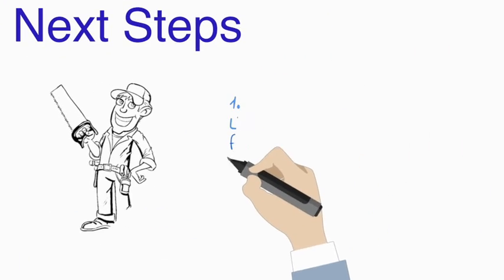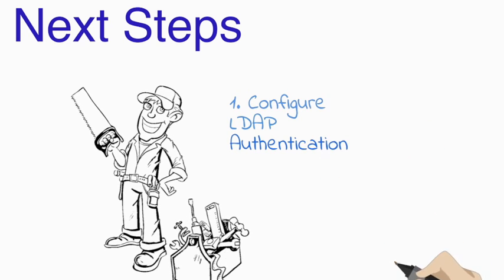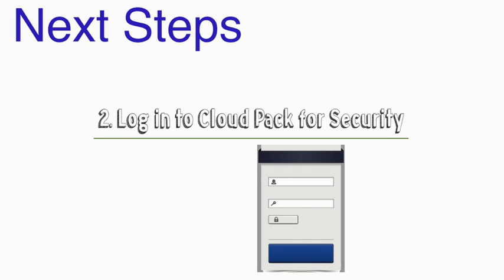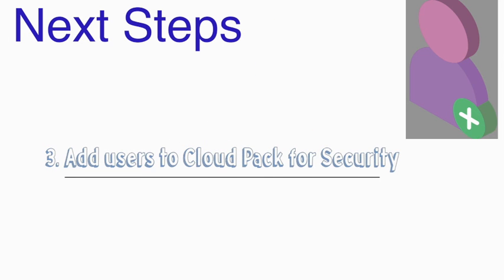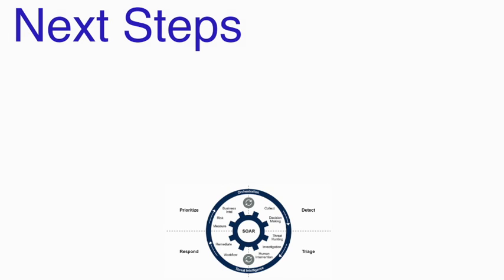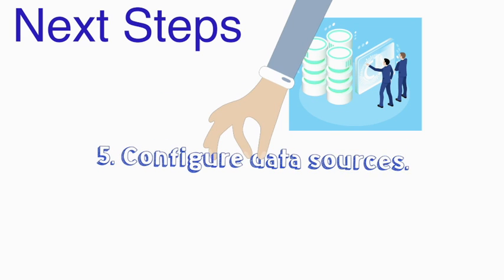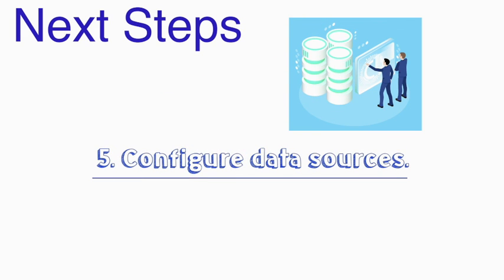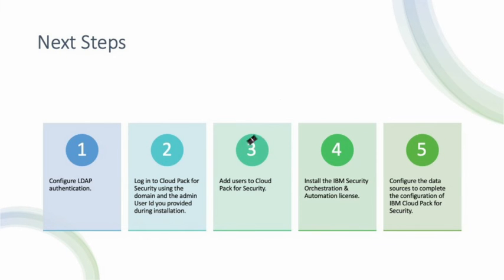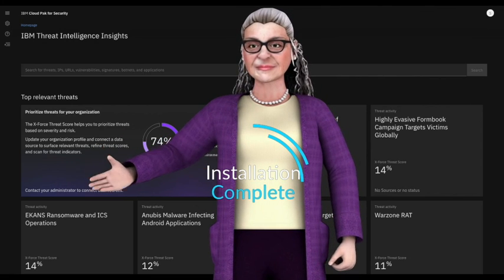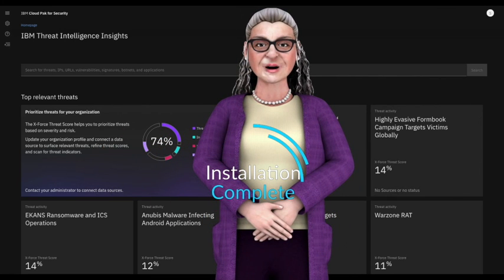Next steps are: 1) Configure LDAP authentication. 2) Log in to Cloud Pak for Security using the domain and the admin user ID you provided during installation. 3) Add users to Cloud Pak for Security. 4) Install the IBM Security Orchestration and Automation License. 5) Configure the data sources to complete the configuration of IBM Cloud Pak for Security. Once you log in to IBM Cloud Pak for Security, you should see the Threat Intelligence Insights Dashboard.